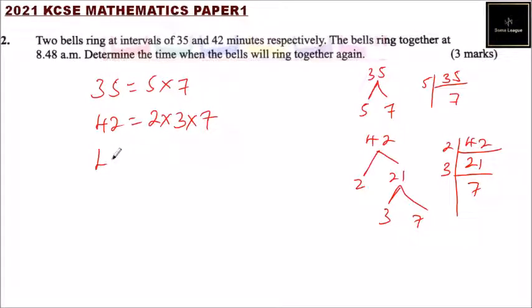Now, how do we get the LCM, the least common multiple? We get the highest factors that we have of the numbers. We start with the lowest: we only have 2, so we take 2, then multiply by 3, we have 5 so multiply by 5.